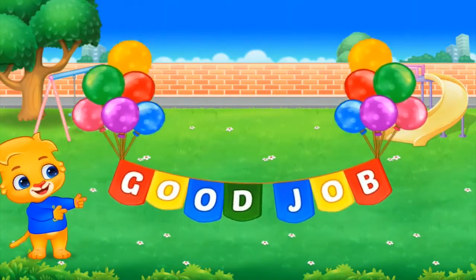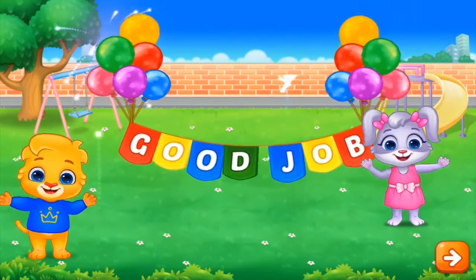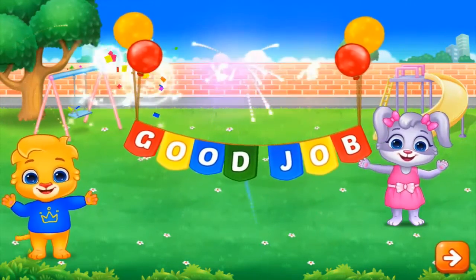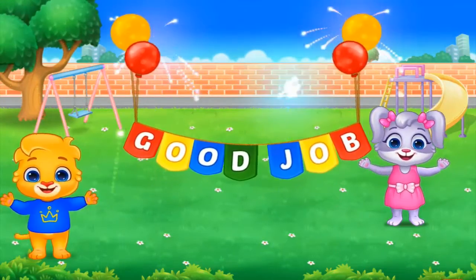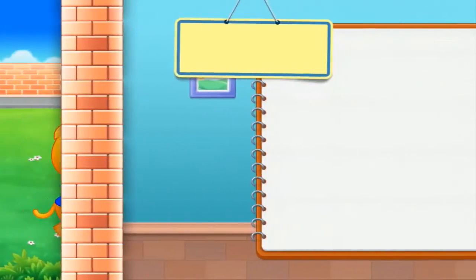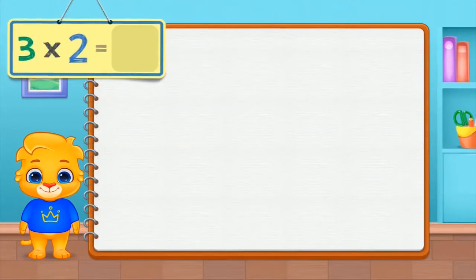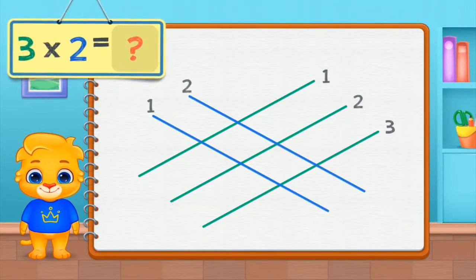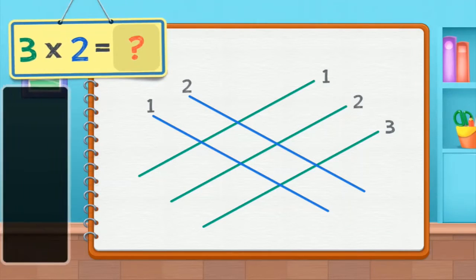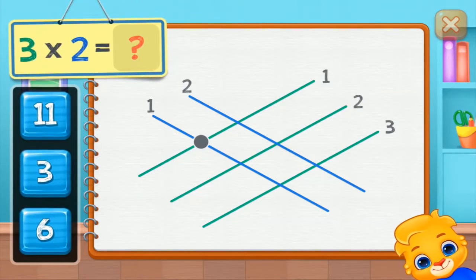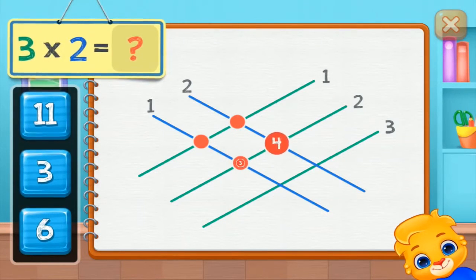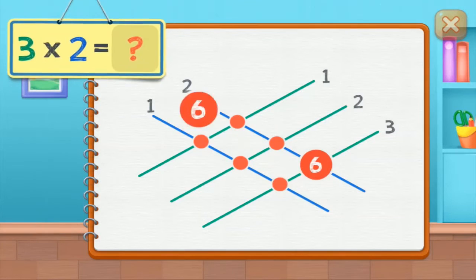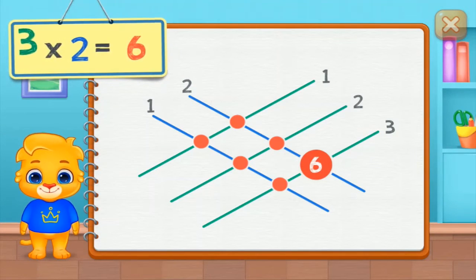Good job! 3 times 2 equals... 1, 2, 3, 4, 5, 6. 3 times 2 equals 6.